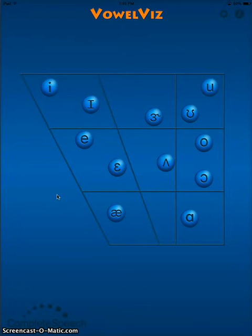lets us see our speech, in particular, R. VowelViz is a visual feedback tool that measures and maps the frequencies in our voice that we hear as vowels.